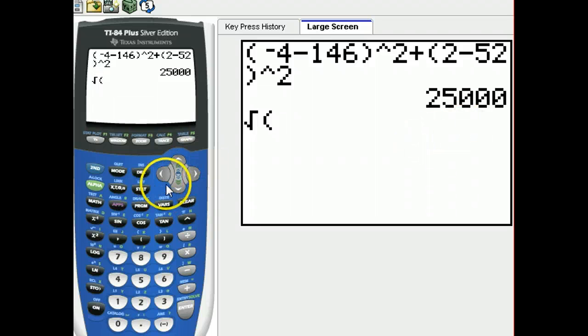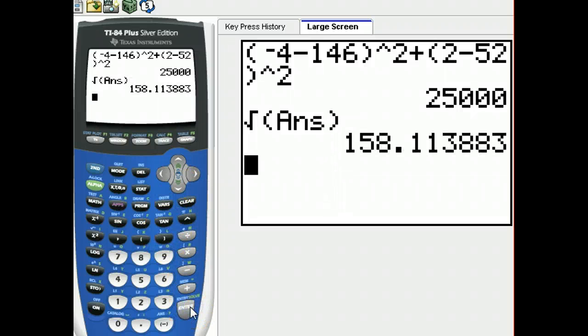Instead of retyping 25,000, I push second and this negative sign, and then it has ANS, which basically means whatever the last number was.